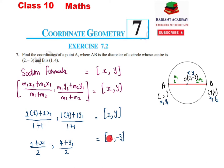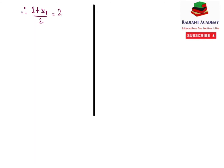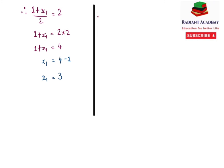Ab dekhiye, therefore: 1 + X1 upon 2 equals 2. Toh X1 ki value mein determine karni hai. 1 + X1 = 2 multiplied by 2 ho jaayega — yah 2 yahan par division se hat kar left hand side se right hand side par jaayega, iski sign change hogi, division se multiplication par aa jaayega. 1 + X1 = 4. X1 = 4 minus 1, toh X1 ki value hamare milti hai 3.